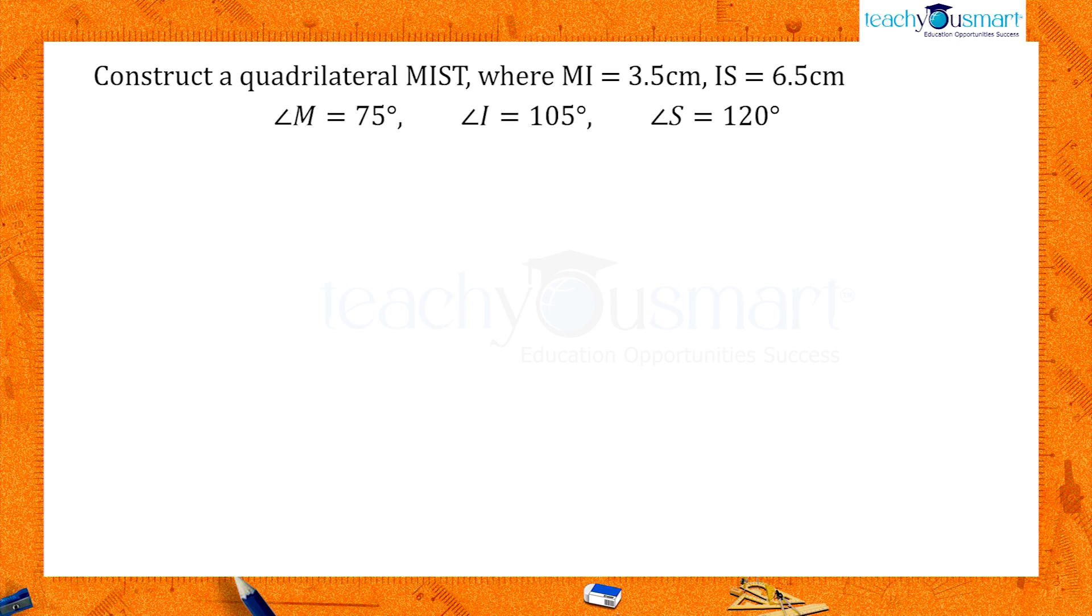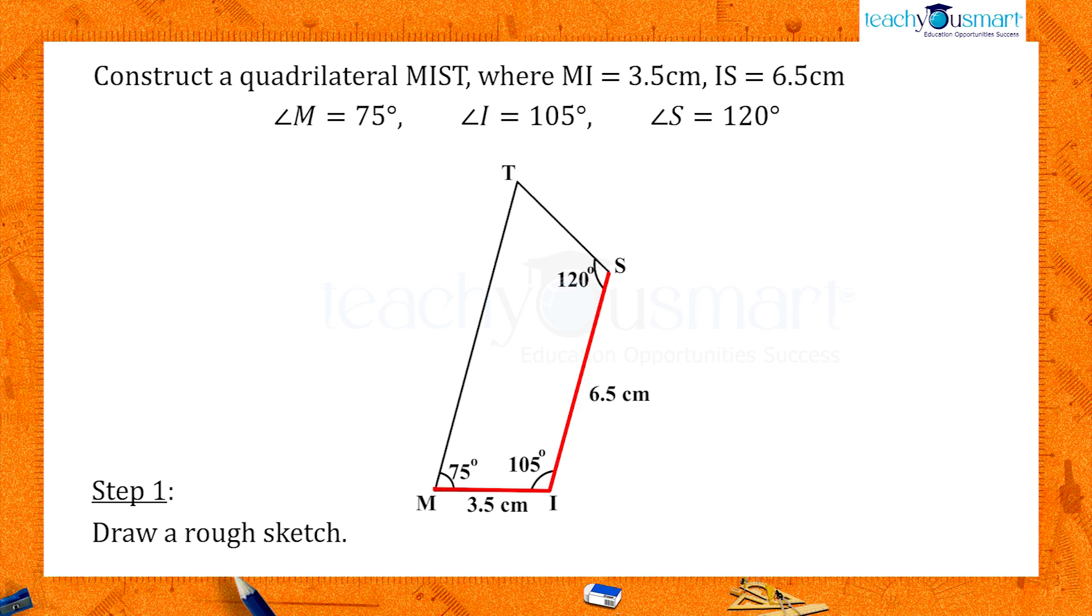As in the previous construction, here also we first draw a rough sketch of the quadrilateral with MI equals 3.5 cm, IS equals 6.5 cm, angle M equals 75 degrees, angle I equals 105 degrees, and angle S equals 120 degrees.